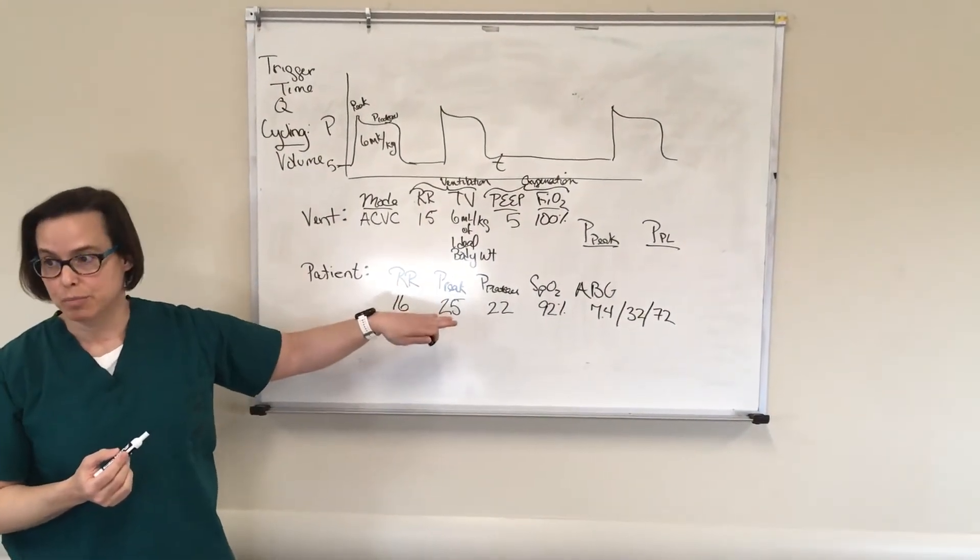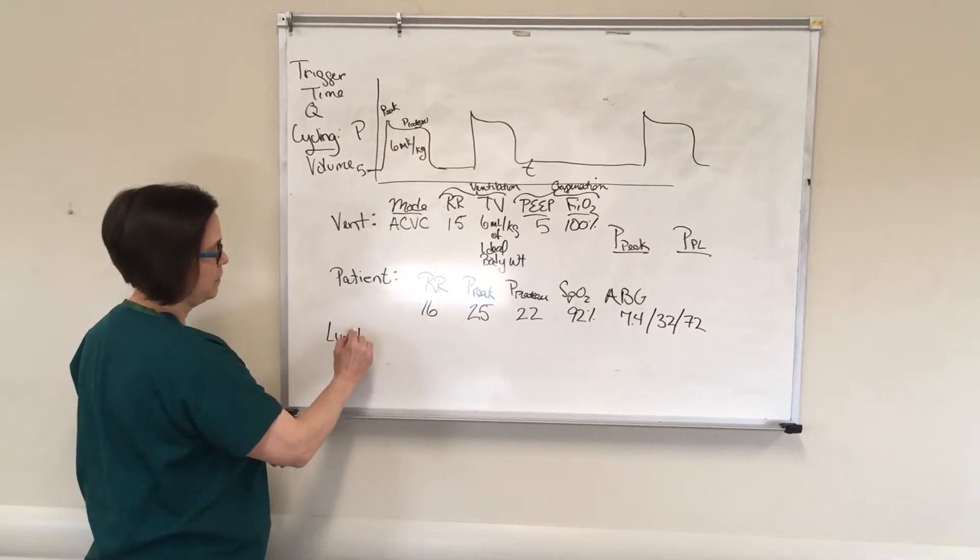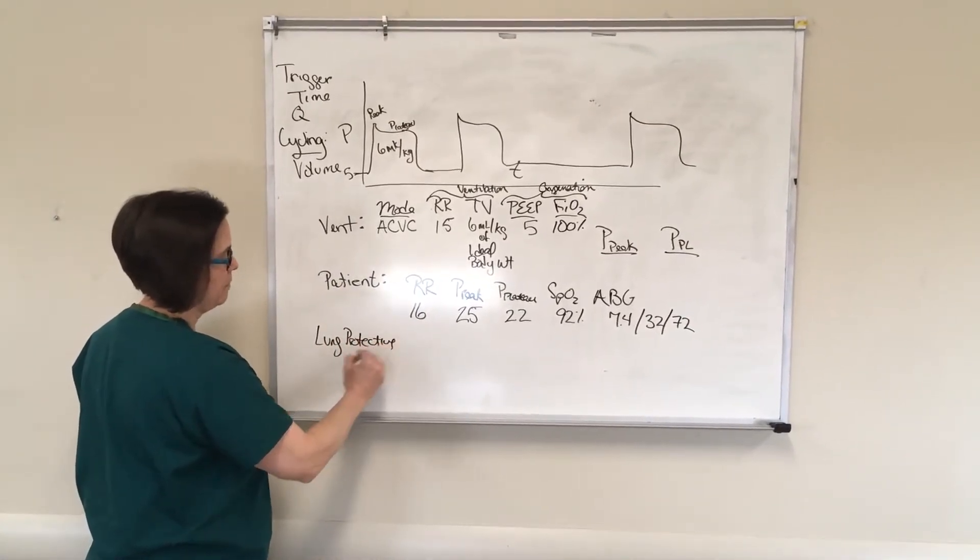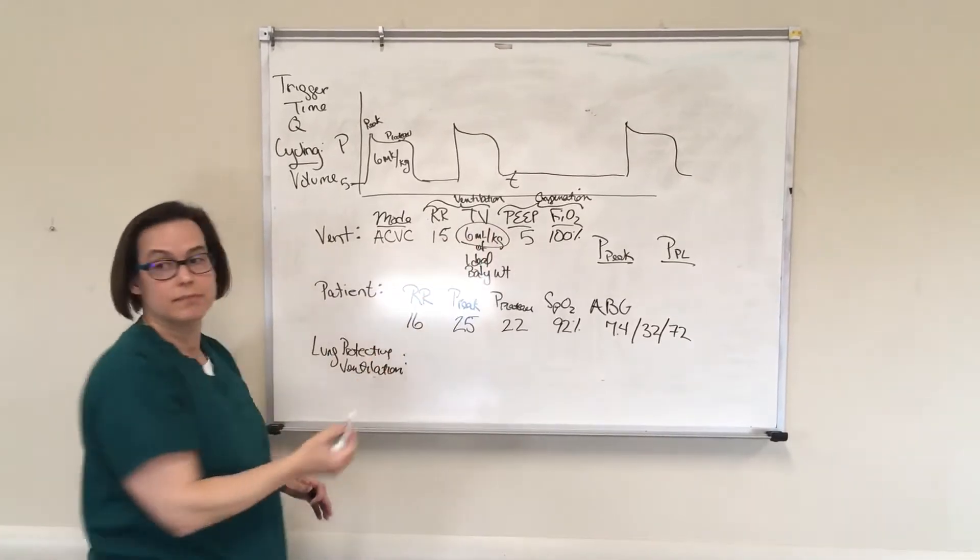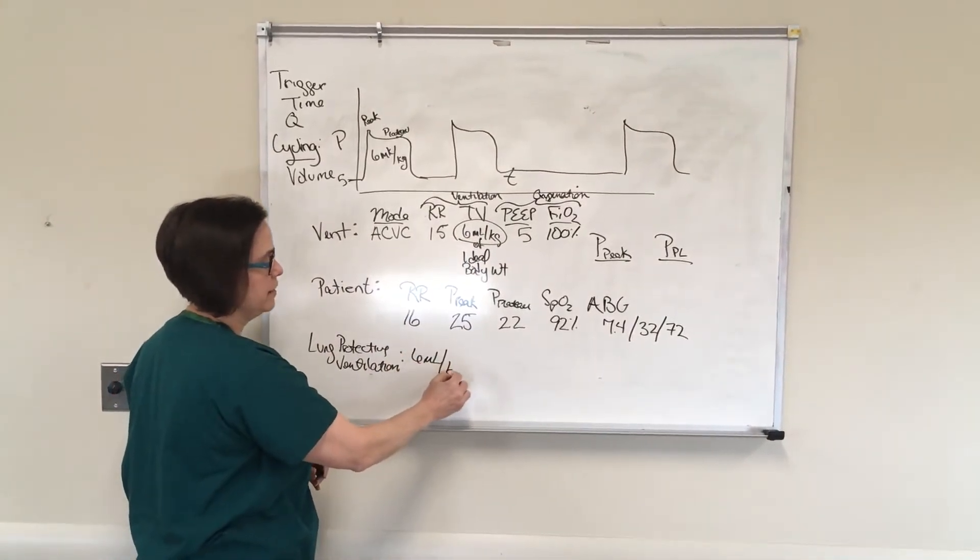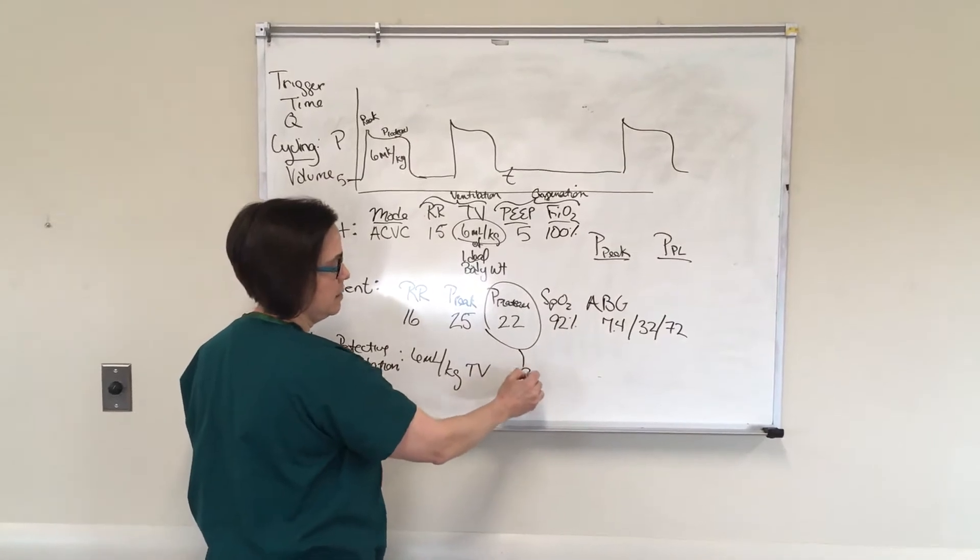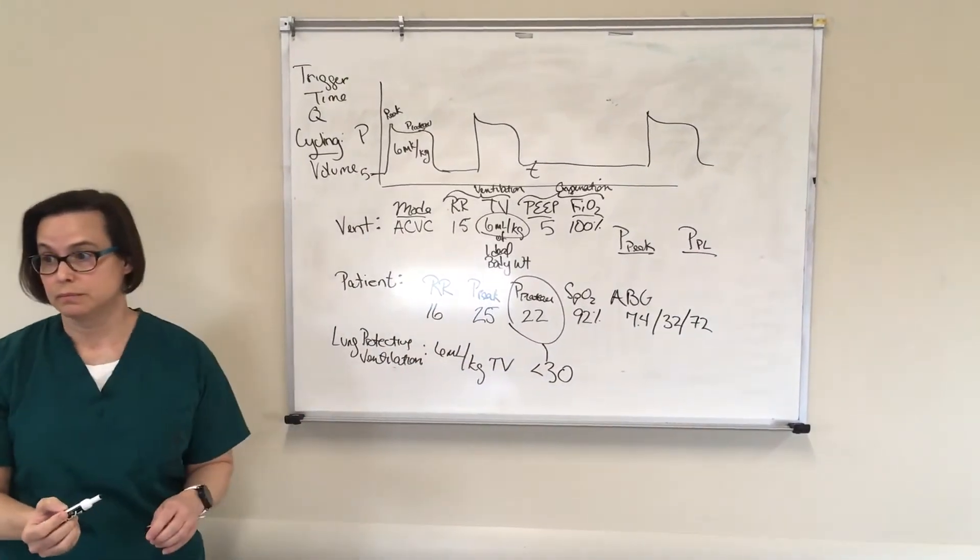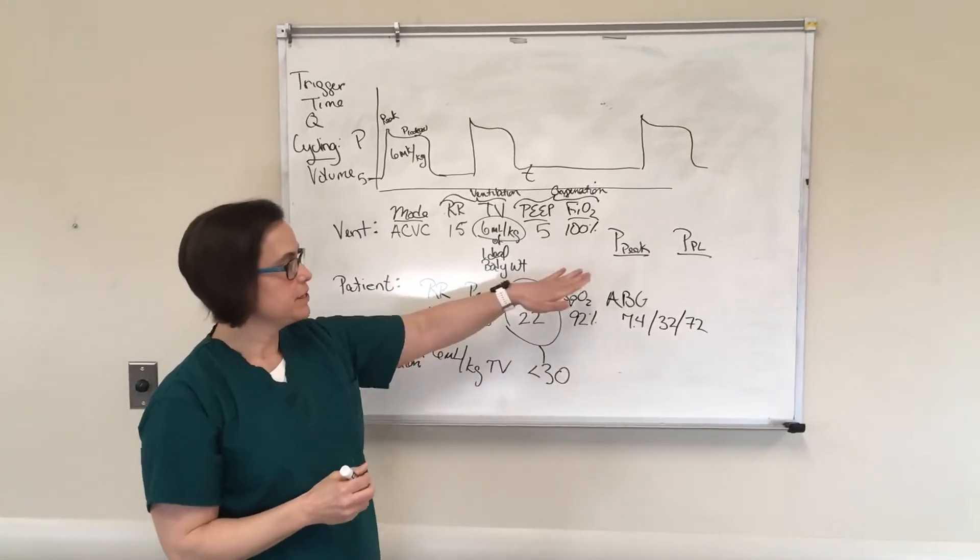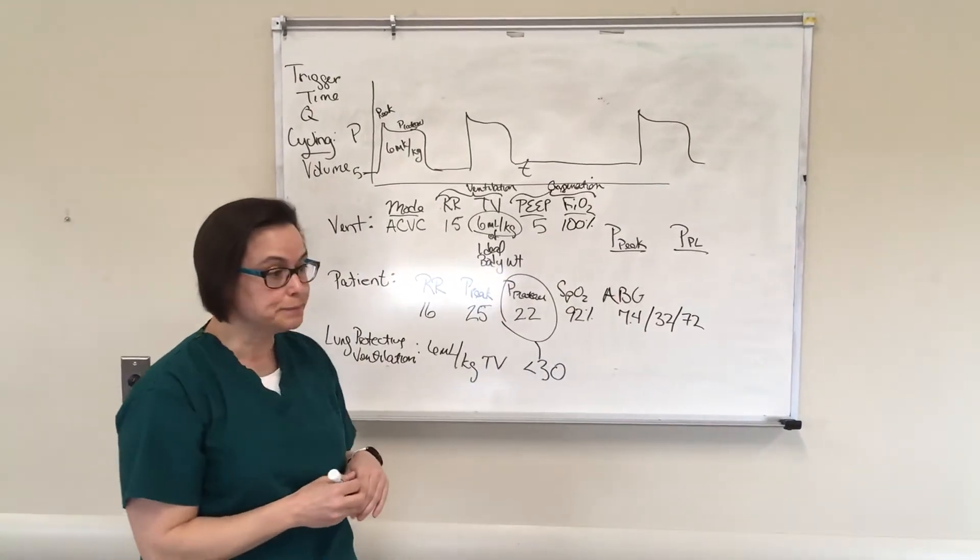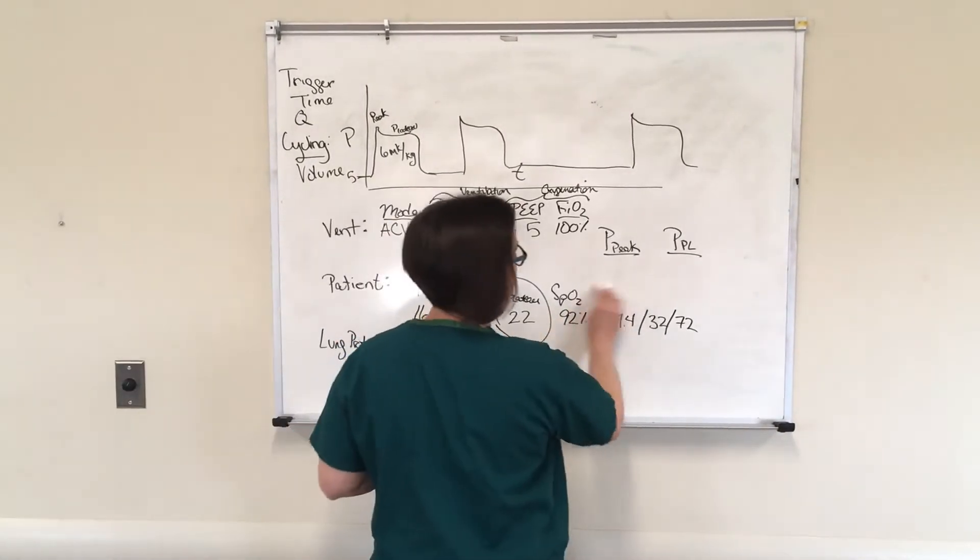All right. So let's address this peak and plateau pressure here issue. The key things that you need to know about lung protective ventilation are really two things. One is this. That's six milliliters per kilogram for your tidal volume is one part of that. And the other part of that is we never want our plateau pressure to be greater than 30. So we always have to watch for that as we're going through things.